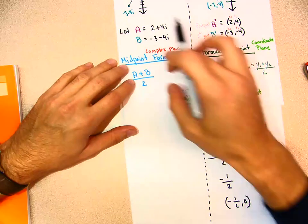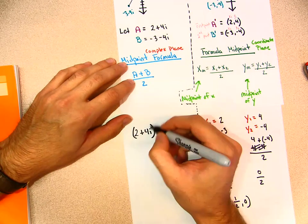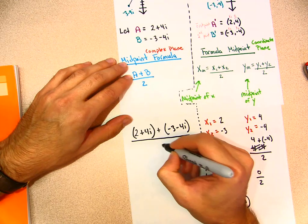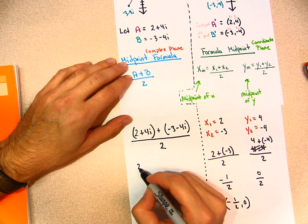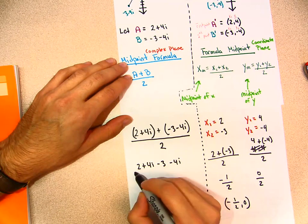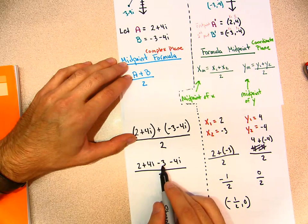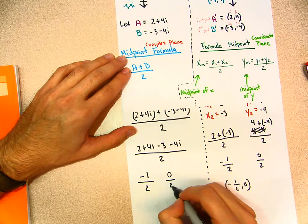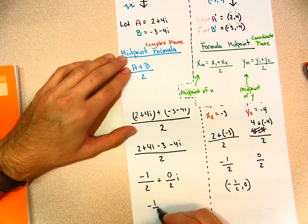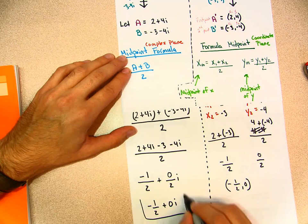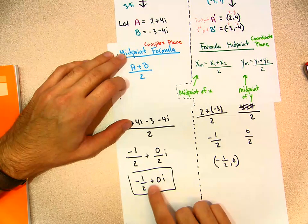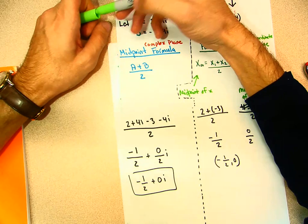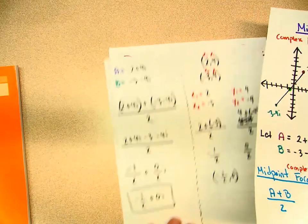What is my a? It's 2 + 4i. So a + b: my b is −3 − 4i, and we divide by two. That gives (2 + 4i) + (−3 − 4i) divided by two. This becomes: 2 − 3 = −1, and 4i − 4i = 0. So we get (−1 + 0i) / 2 = −1/2 + 0i. Notice how these two results are very similar — this complex number represents the midpoint between the two points.